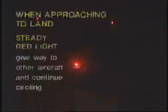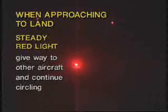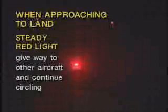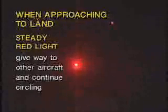If you're in the air and you see a steady red light, a steady red light means give way to other aircraft and continue circling. It's not time to land yet — give way and circle.